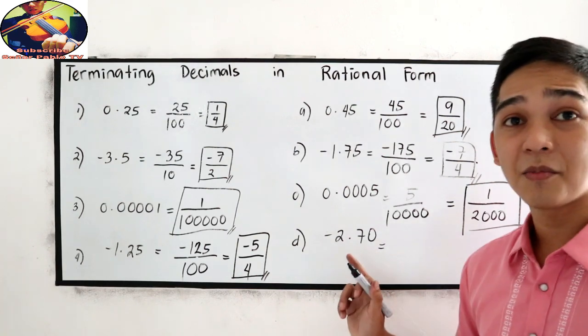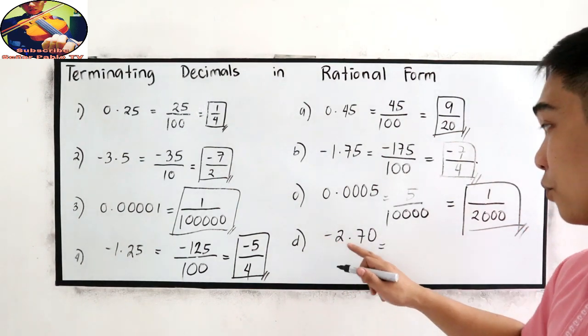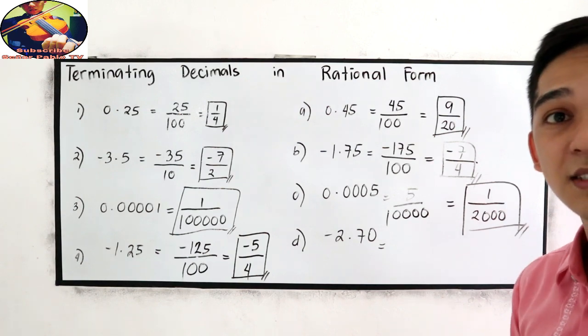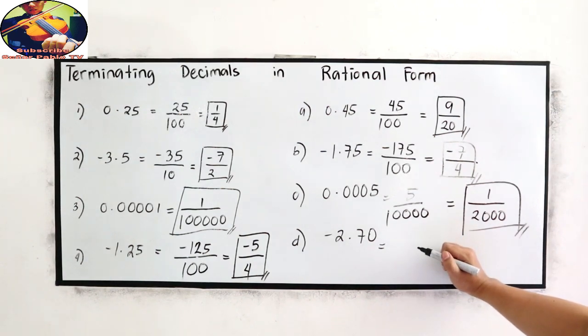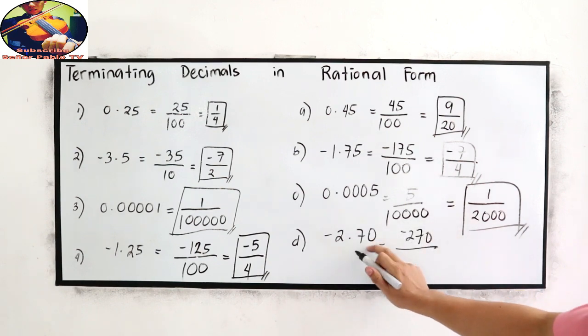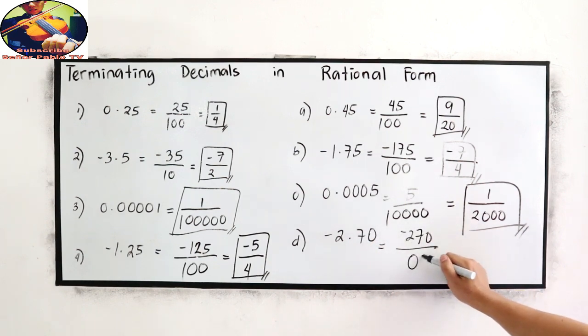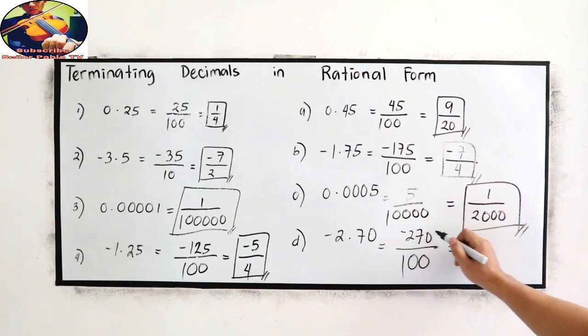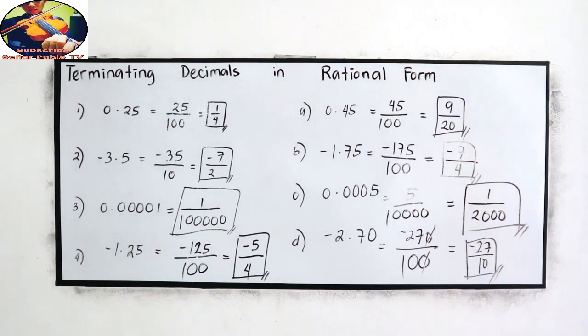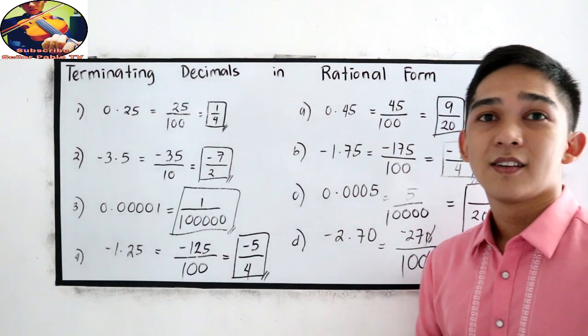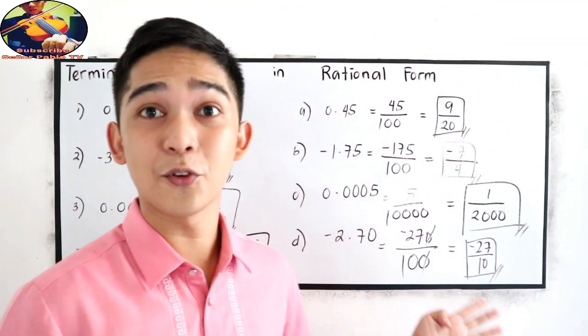And our last number, negative 2.70. So this is negative 270 over two decimal places. So two zeros in the denominator. So we can cancel zero and zero. So that is negative 27 over 10. This is our final answer. So I hope that you got 4 over 4.